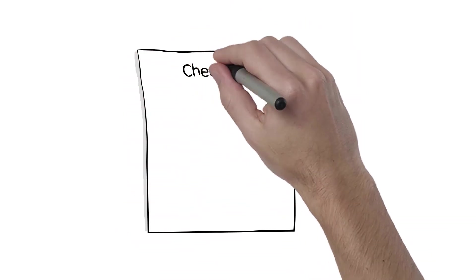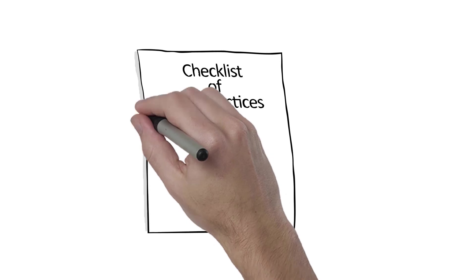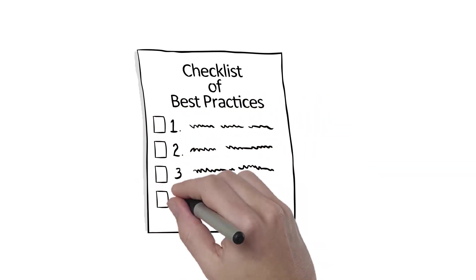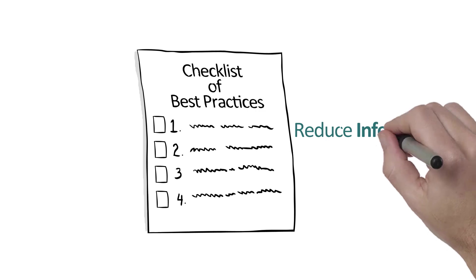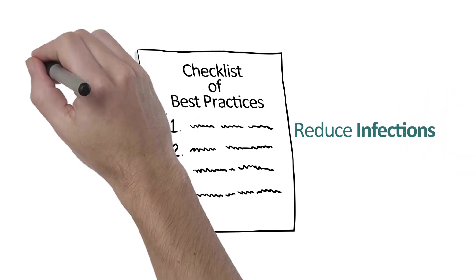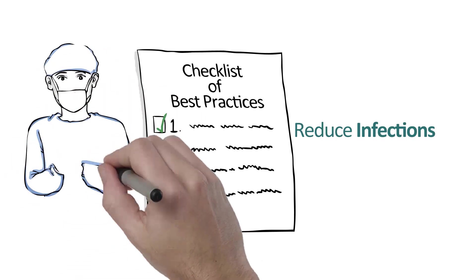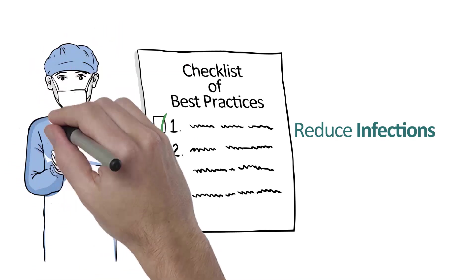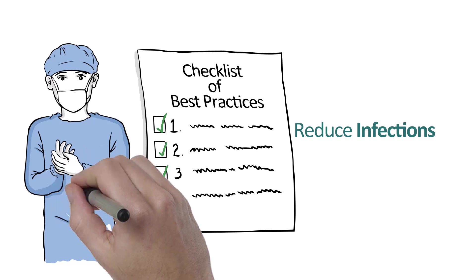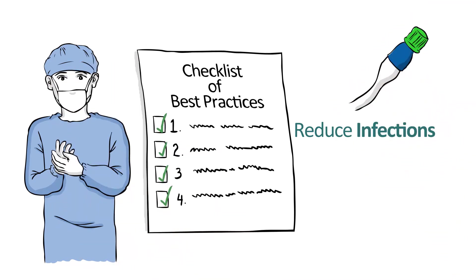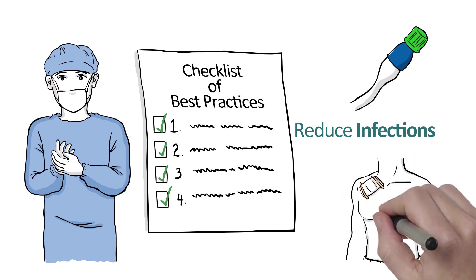Likewise, a simple checklist of best practices used while inserting and maintaining venous access catheters has been shown to greatly reduce avoidable and costly bloodstream infections. The checklist includes steps like using a full sterile barrier, including mask, cap and gown during insertion, ensuring that the access port is disinfected prior to each medication administration or blood drop by scrubbing or using disinfecting port protectors, and being sure to remove any catheter as soon as it is no longer needed.